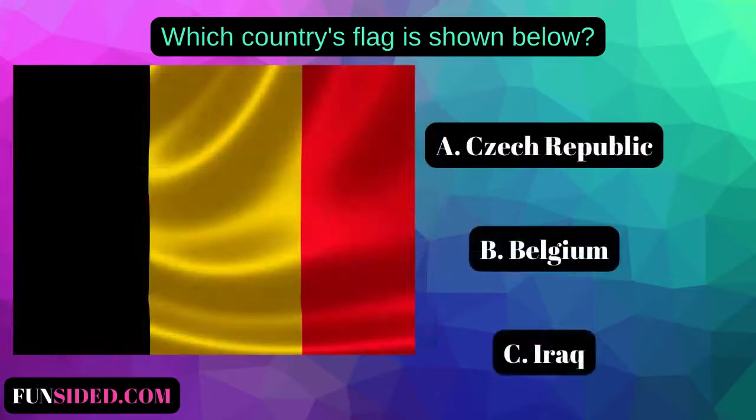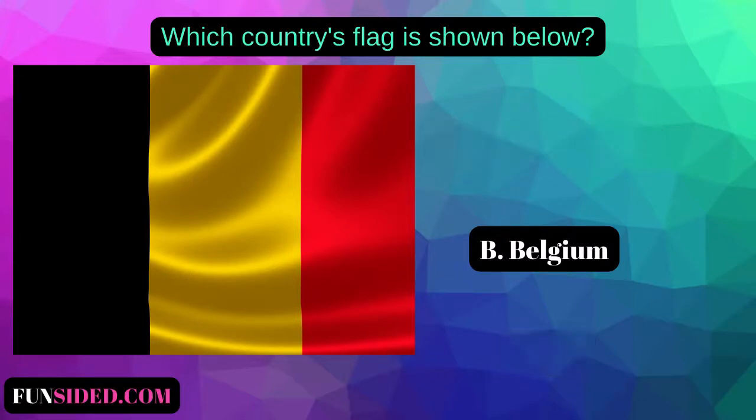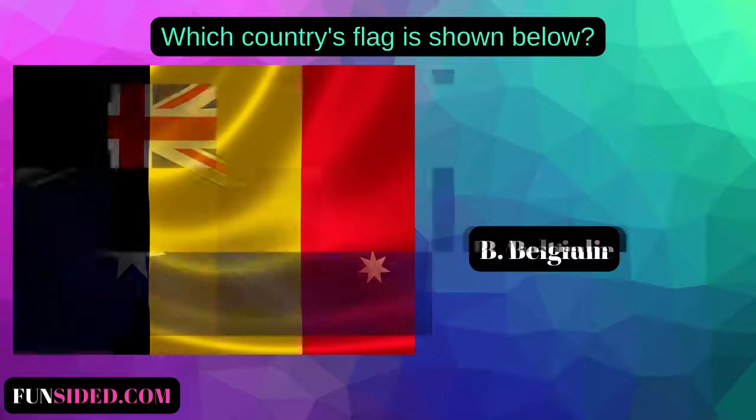Which country's flag is shown below? A. Czech Republic. B. Belgium. C. Iraq. The correct answer is Belgium.